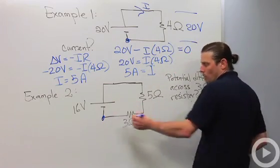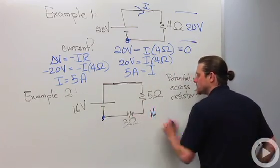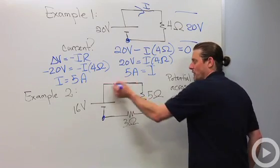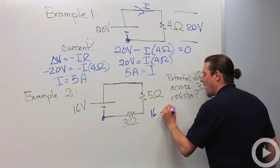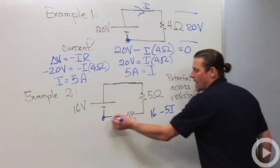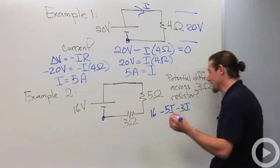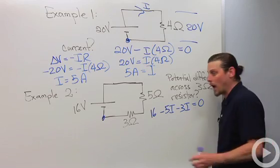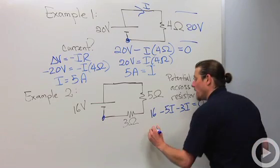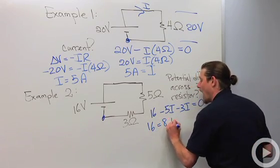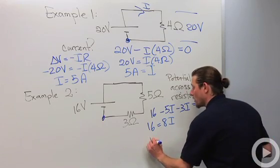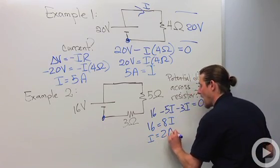So we'll start off and we got 16 volts, nothing, minus 5I, minus 3I, and now we're back to the beginning so we got zero. Adding the 5 and the 3 we got 16 equals 8I, and therefore the current is 2 amps.